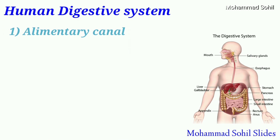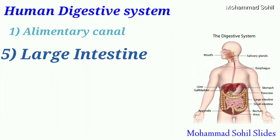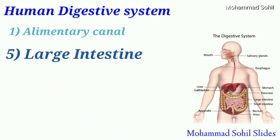Now the large intestine. The large intestine has a larger diameter and a length of about 1.5 meters. Absorption of water and salts takes place here through the villi present in the wall of the large intestine. It does not have any digestive function but stores the undigested food for some time.